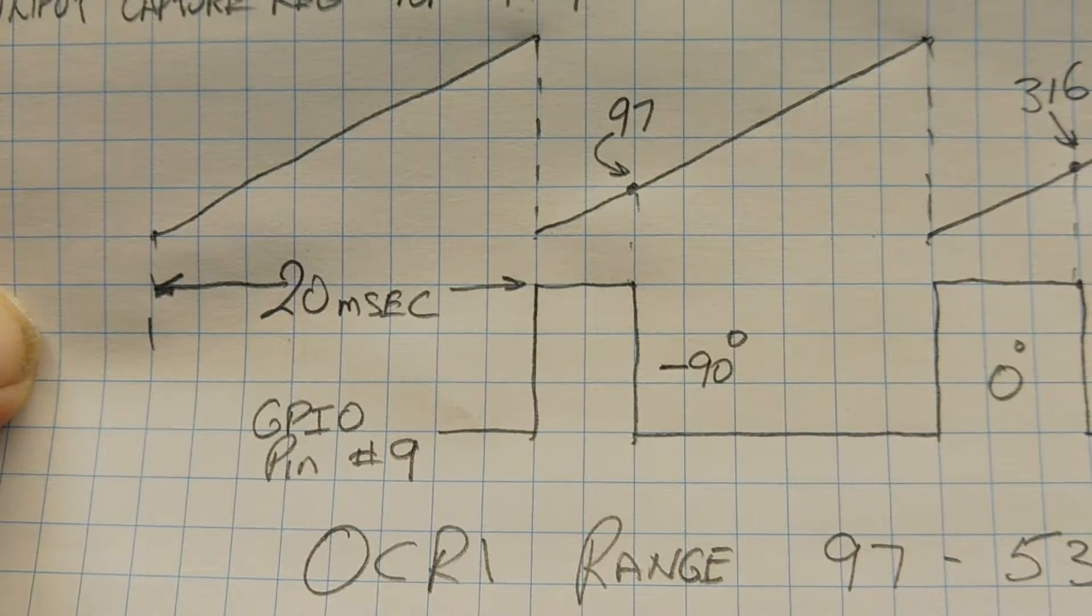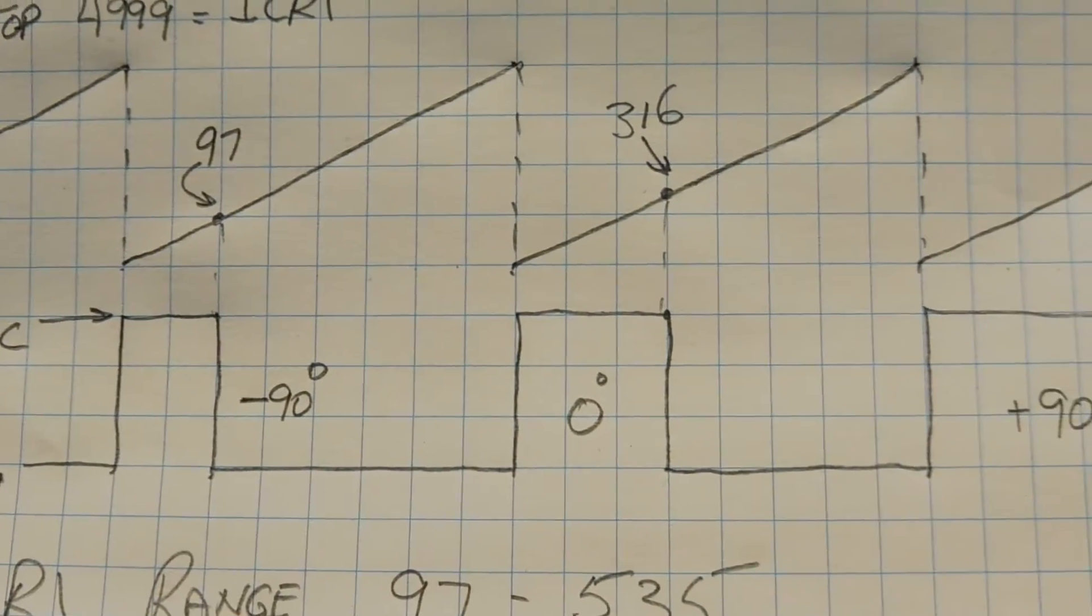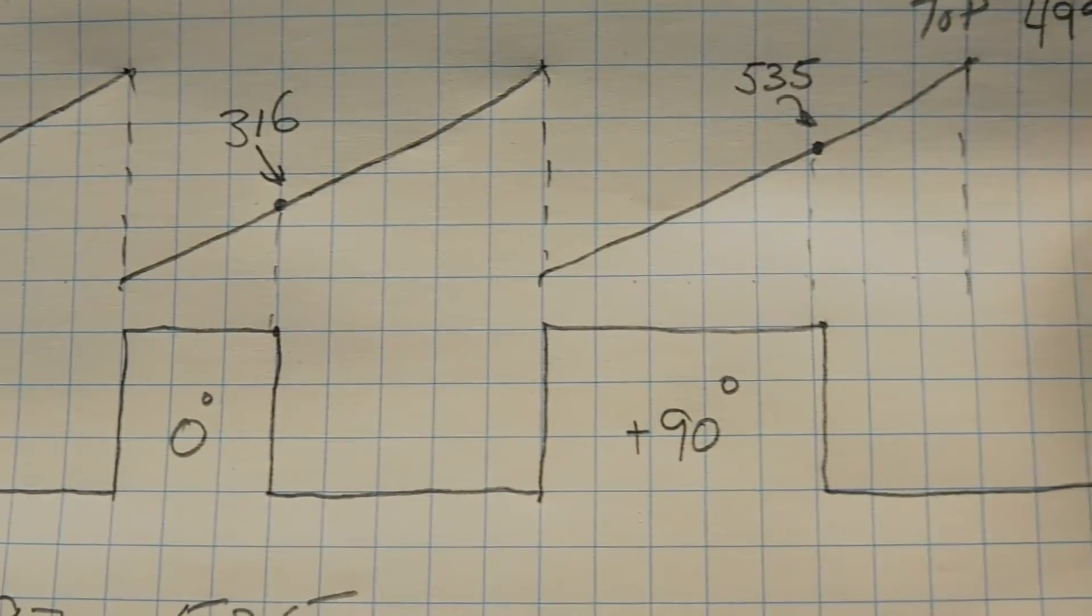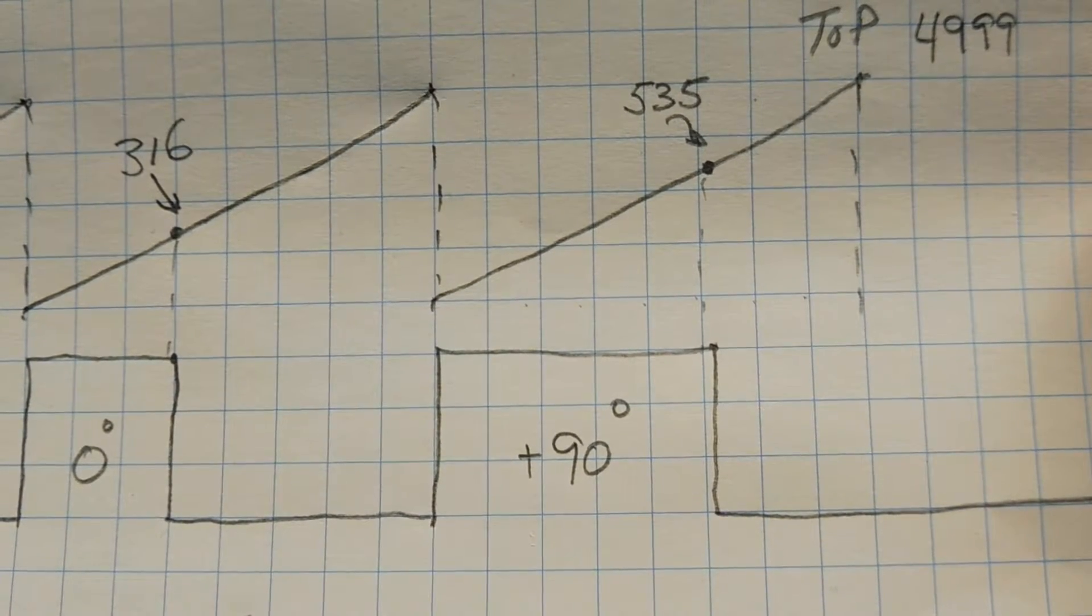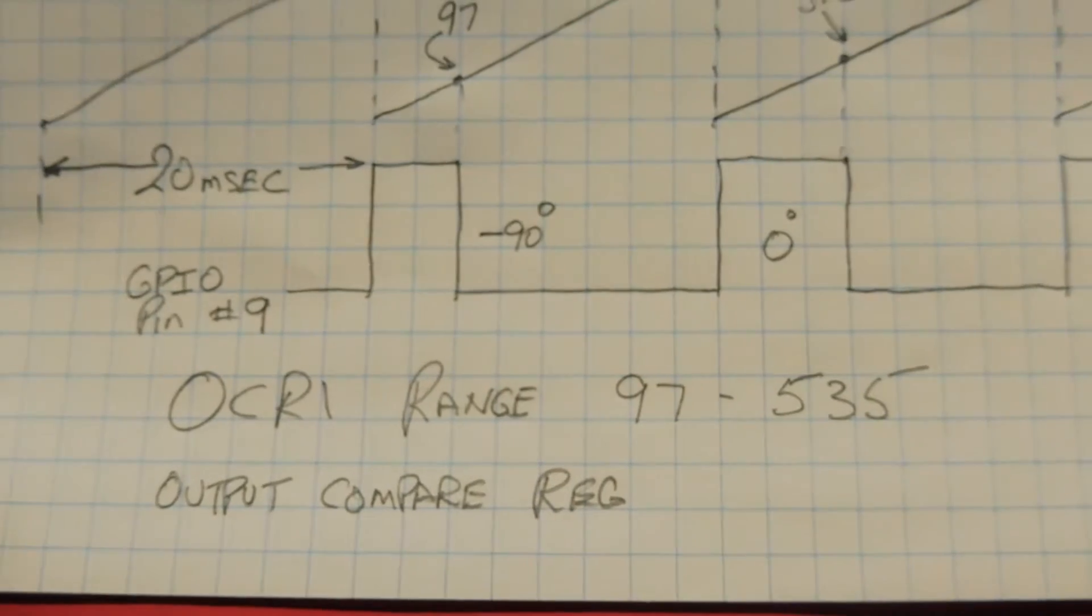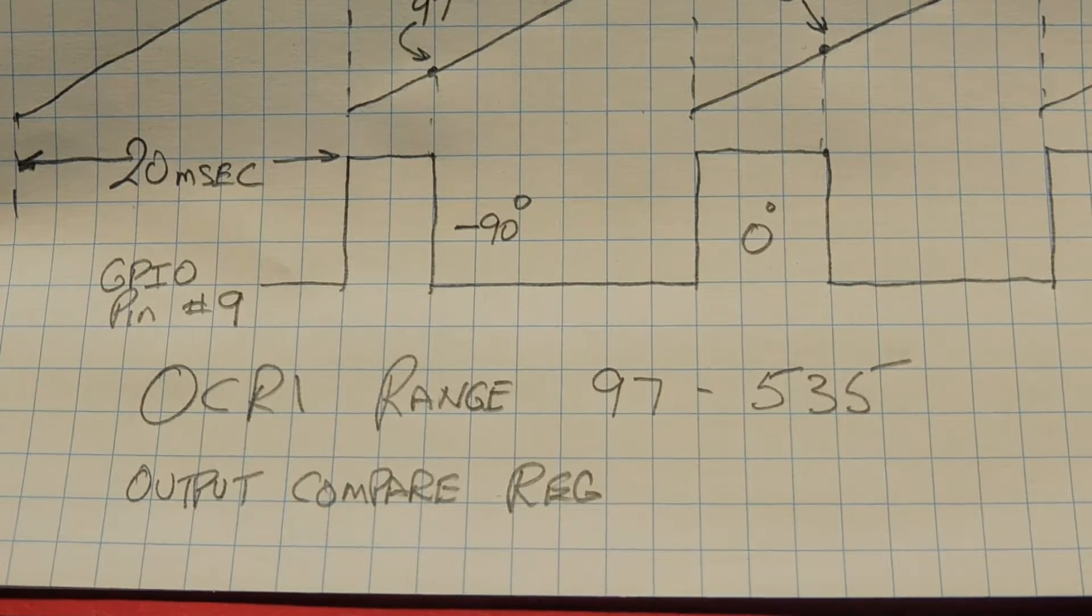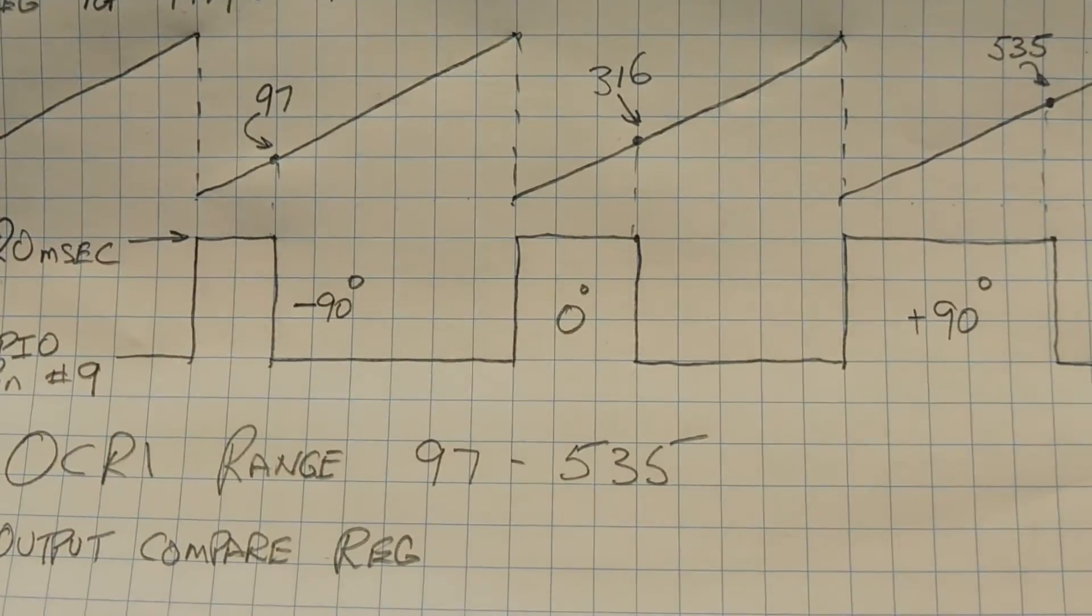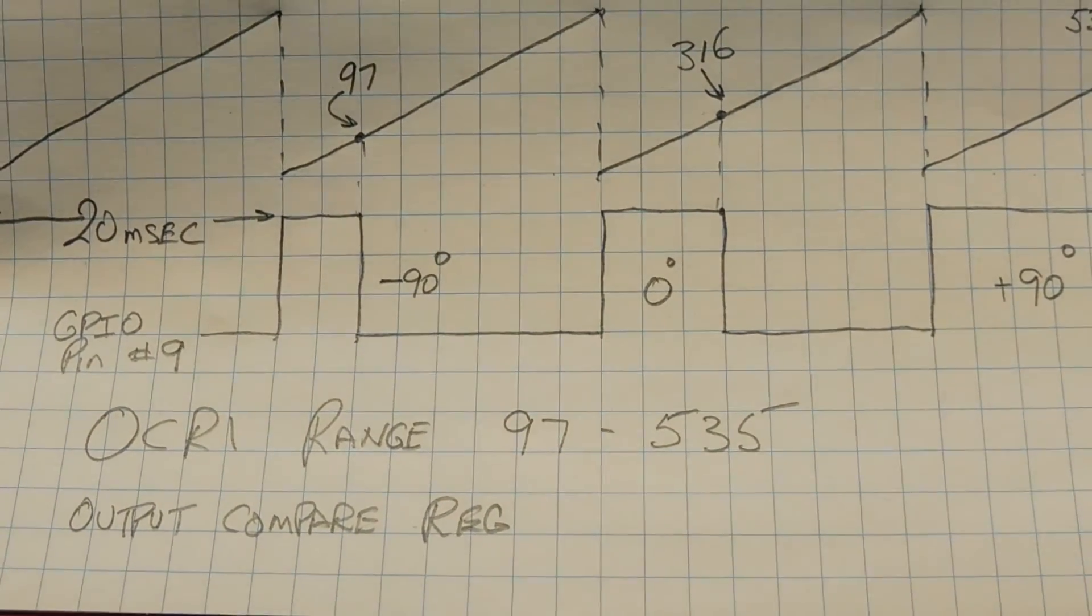So a value of 97 will give us a pulse width that will bring our servo motor into the minus 90 degree position. I have calculated other values. Here you see 316 will give us a pulse width to bring our servo motor into its neutral zero degree position. And with a value of 535, we'll get a pulse width that will drive our servo motor into the plus 90 degree position. So that's 535 count times 4 microseconds will give us our pulse width. So all we have to do in our code is to load a value between 97 and 535 into the OCR1 register, the output compare register. And that will drive our servo motor from one extreme minus 90 degrees to the other extreme plus 90 degrees. And that's how we drive our servo motor with the microcontroller.